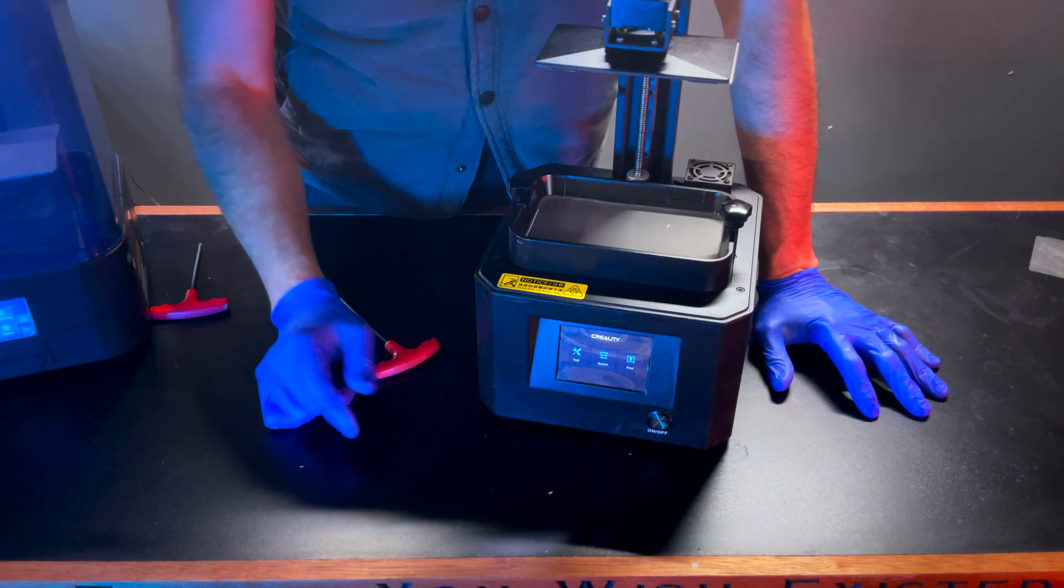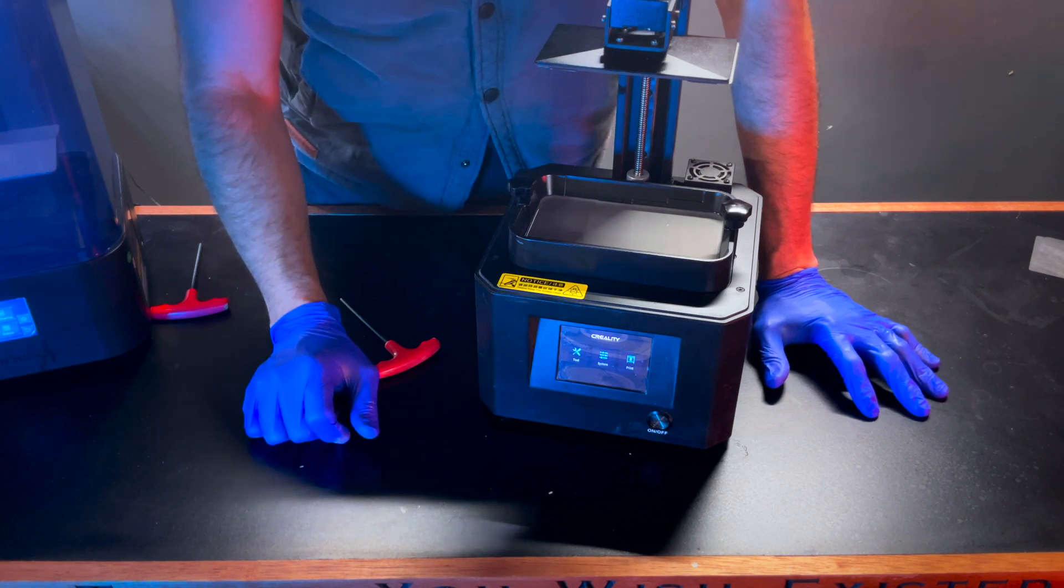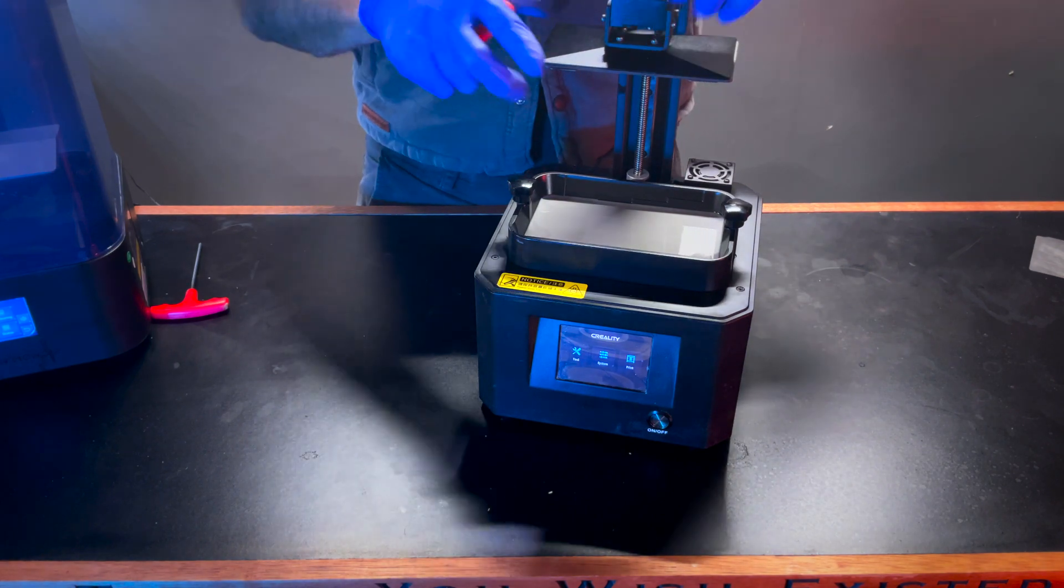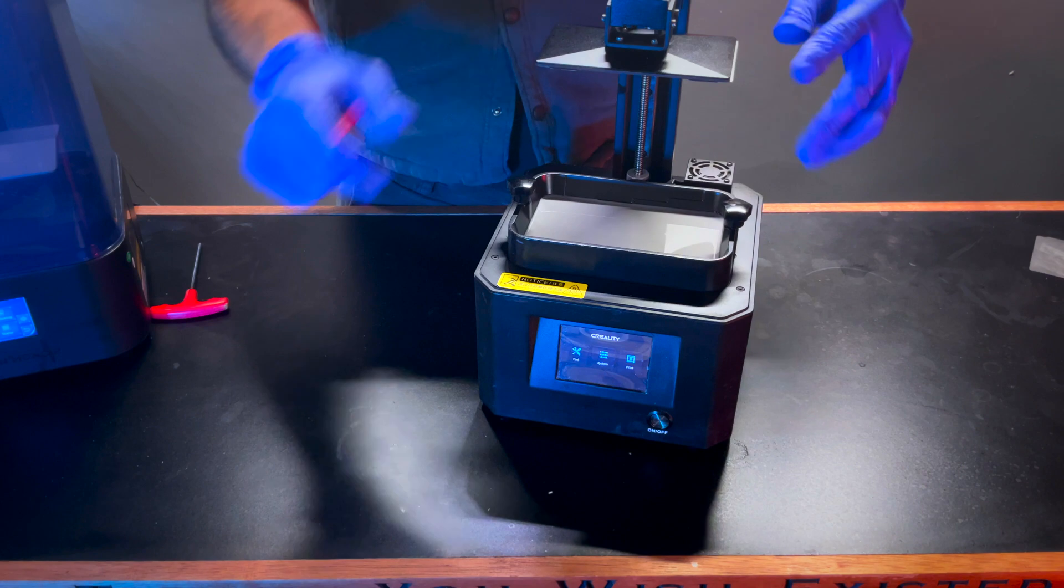And I'm going to go ahead and show you how to do it so that you don't have to clean out your resin vat each time this needs to happen. So, same as before, you're going to want to go ahead and make sure your build plate is firmly attached to your Z axis arm.